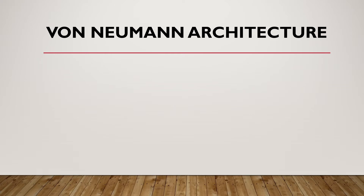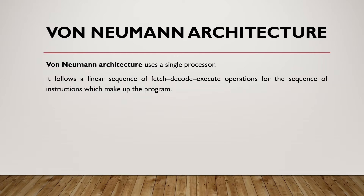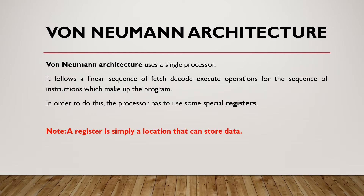In the Fetch-Execute Cycle, we're going to look at what is the von Neumann architecture. The von Neumann architecture uses a single processor. It follows a linear sequence of Fetch-Decode-Execute operations for the sequence of instructions which make up the program. In order to do this, the processor has to use some special registers. A register is simply a location that can store data in the processor or in the computer itself.